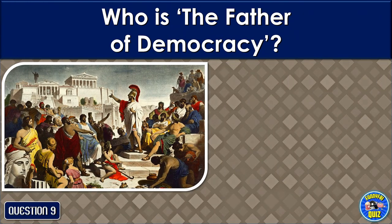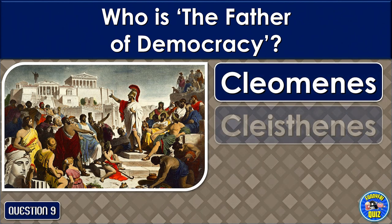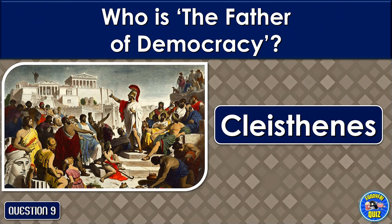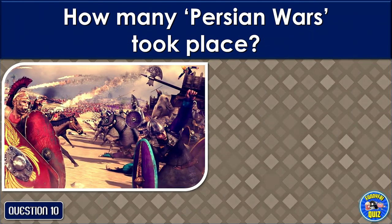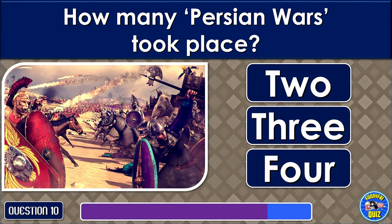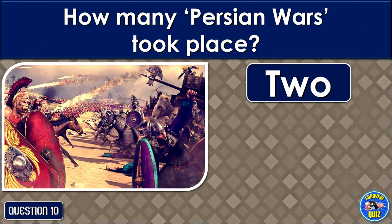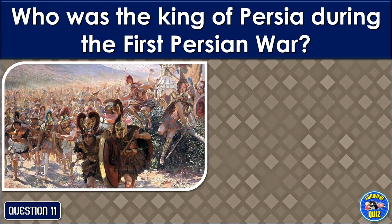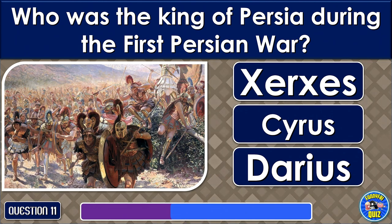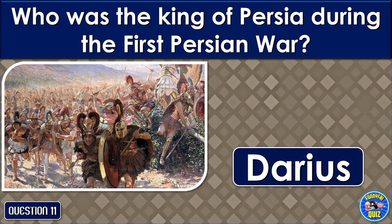Who is the father of democracy? Cleisthenes. How many Persian wars took place? Who was the king of Persia during the First Persian War? Darius.